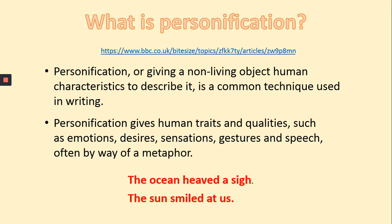Which words indicate that these are personification? When it says 'the ocean heaved' and 'the sun smiled' — the ocean cannot heave a sigh and the sun cannot smile. These are all things that humans do, the qualities that we have. However, the ocean and the sun are non-living, inanimate objects. When we give them these human qualities in our writing, this is known as personification.